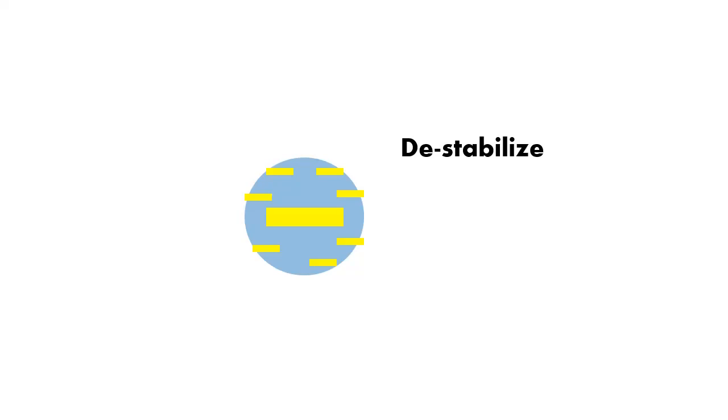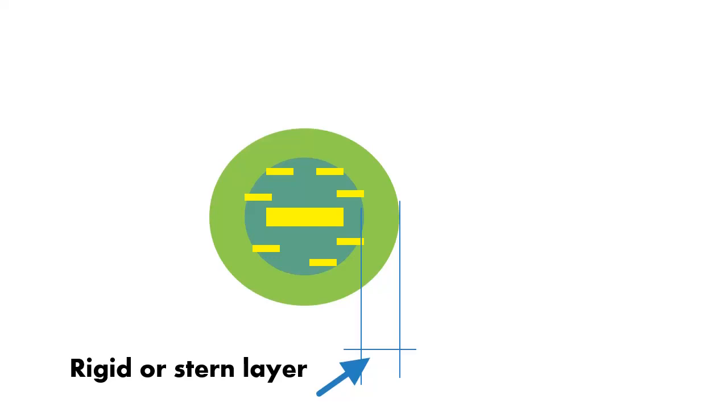Now what we need to do is destabilize these particles. Destabilize means we need to build one surface layer on the colloidal particle. The colloidal particle is negatively charged, and we need to make one surface on it. When we make that thin surface on the colloidal particle, we will call it the rigid or stern layer. When the stern layer attaches, there will be a drop in potentiality — that is called the stern potential.